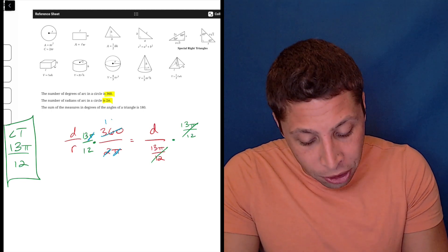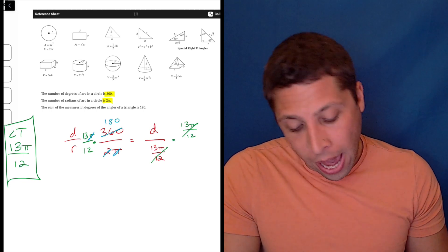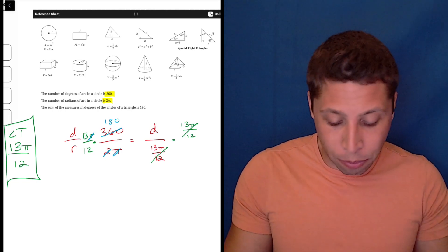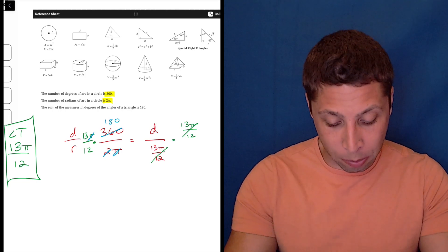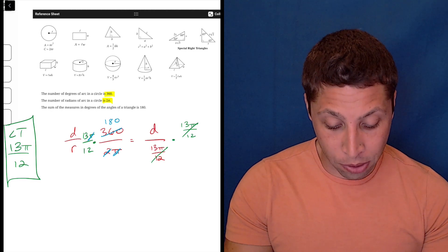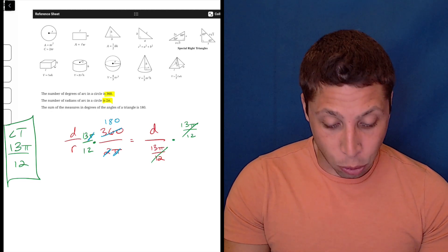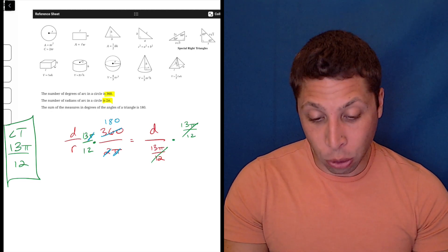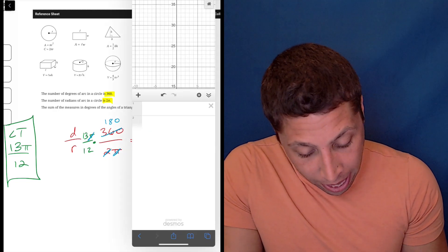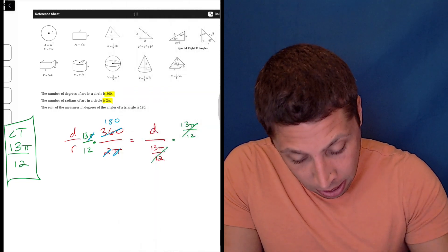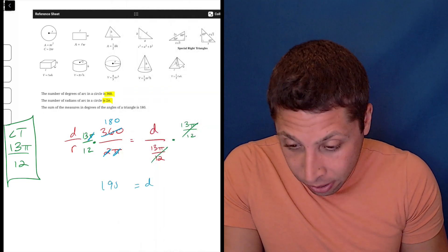Maybe get rid of the 2, turn that into a 180. And then, yeah, at this point I could probably divide by 12 in my head, but at this point I would just do 13 × 180 is that 2340 again and divide by 12. And again, I'm going to get that. Don't need that. I'm going to get the D is 195.